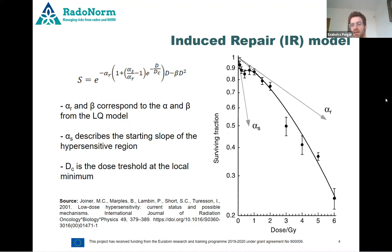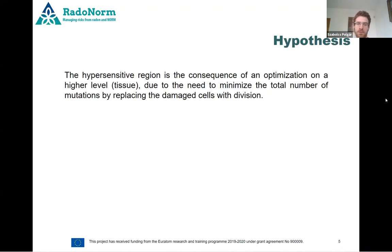The problem is that the alpha-s and dc parameters do not have a biological meaning, and that is what we want to change. Our hypothesis is that the hypersensitive region is the consequence of an optimization at a higher level — the tissue level, not the cell level — where cells want to minimize the total number of mutations by going into apoptosis if they have a high level of damage, and other cells replace them through division.